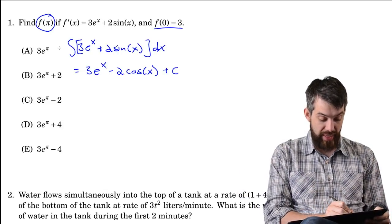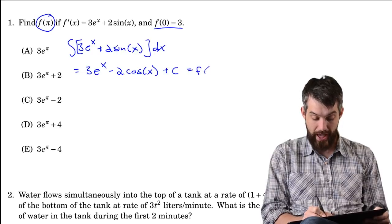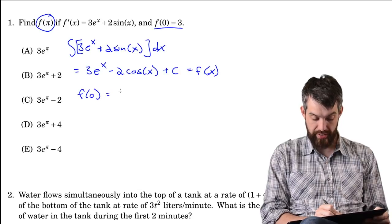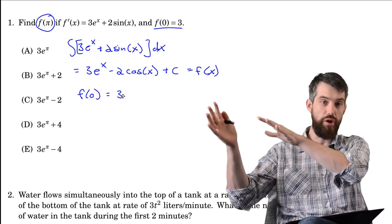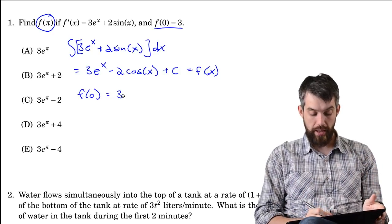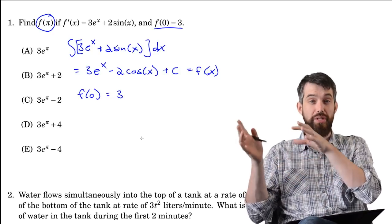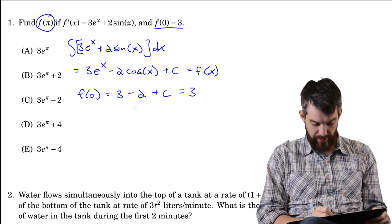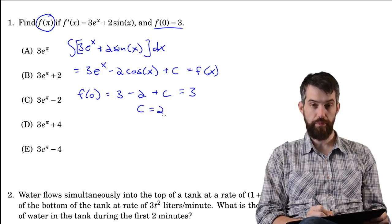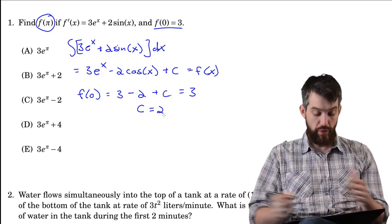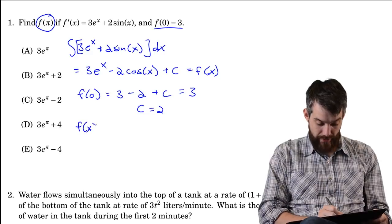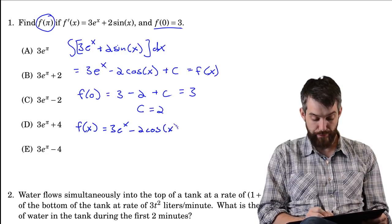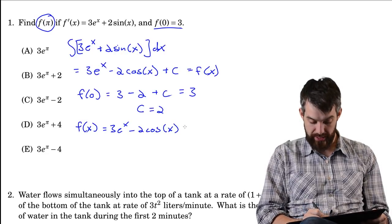If this equals f of x generically, then f of 0 is 3 times e to the 0, and e to the 0 is 1, so 3 times 1. Then cosine of 0 is also 1, so minus 2 times 1, which is minus 2. Setting that equal to 3 gives C equal to 2. So f of x is 3e to the x minus 2 cosine of x plus 2.